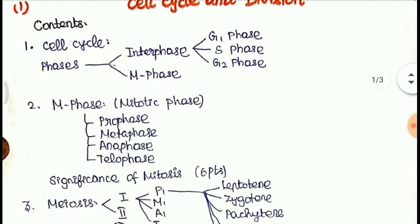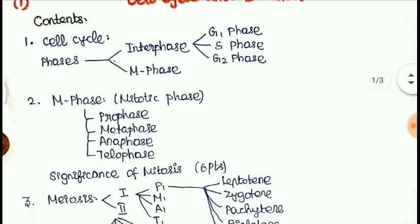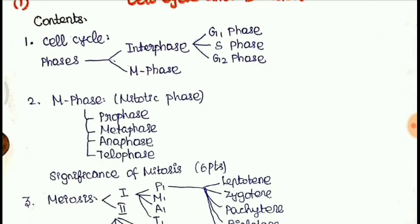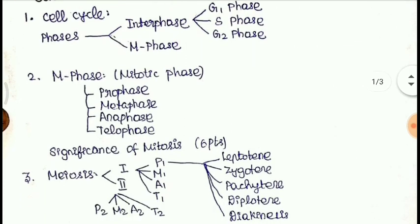If we see about the contents — in the cell cycle, we will find the phases. Interphase and M phase. In interphase, we will find the G1 phase, S phase, and G2 phase.